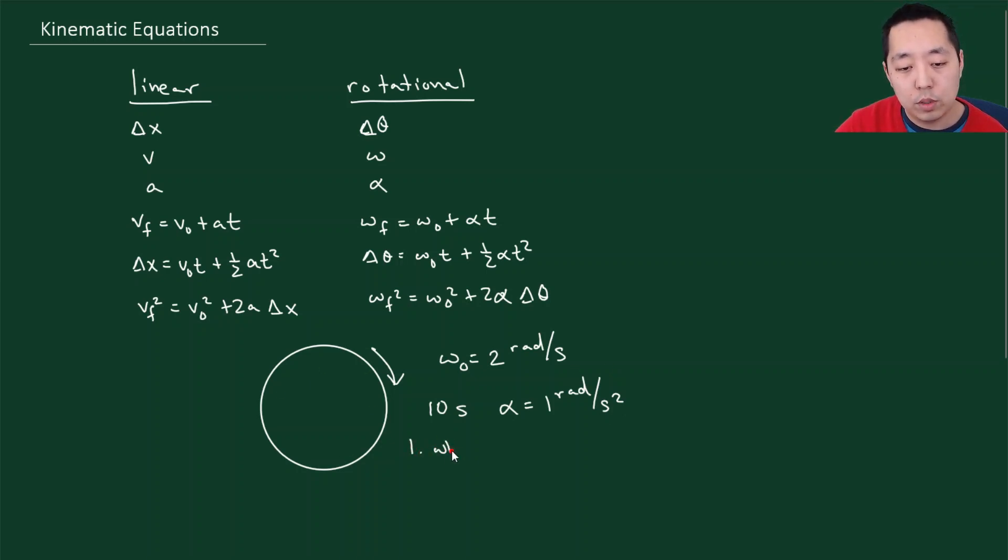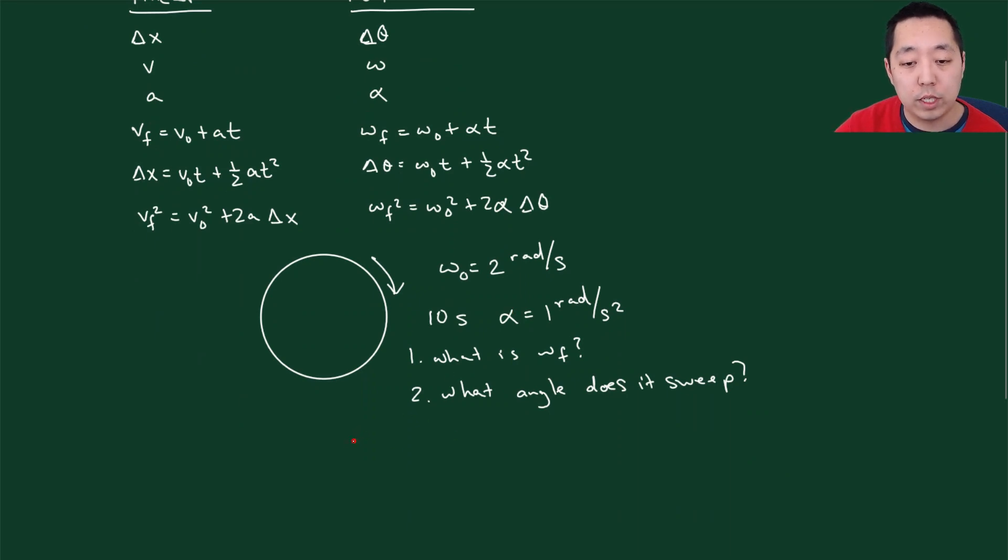And the question might be, what is the final angular velocity? And two, what angle does it sweep? Okay. So we're going to use our kinematic equation. Omega f is omega 0 plus alpha t. That's equal to omega 0 was 2 radians per second plus alpha, which is 1 radians per second squared. And the amount of time I did it for was 10 seconds. So this is 10 plus 2, that's 12 radians per second.